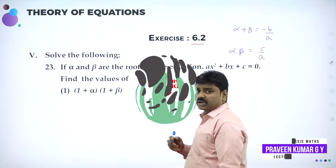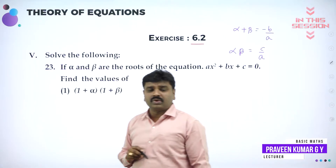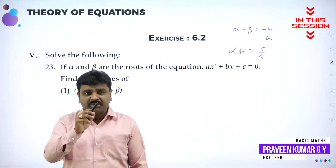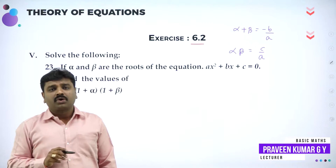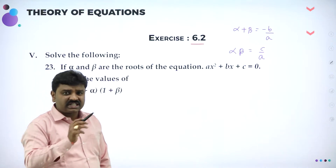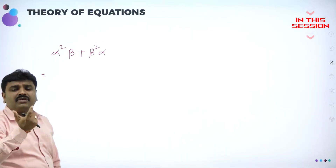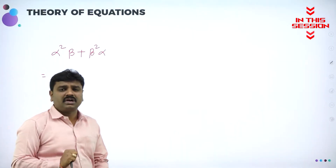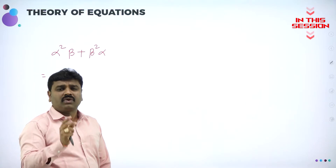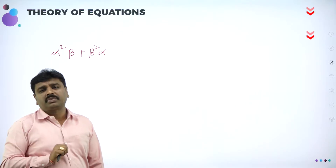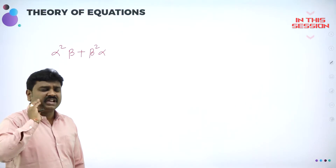Sum of the roots and product of the roots. What is sum of the roots? Minus B by A. Product of the roots, C by A. We don't know the direct value of alpha squared beta and beta squared alpha. What we'll do? We'll convert it into sum and product. It is very easy.